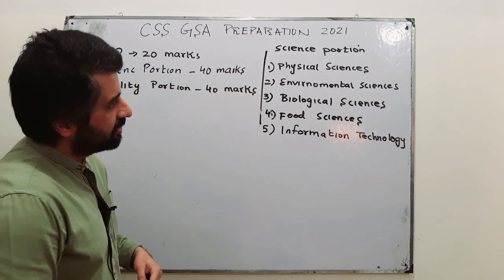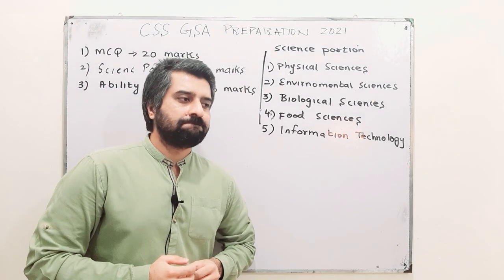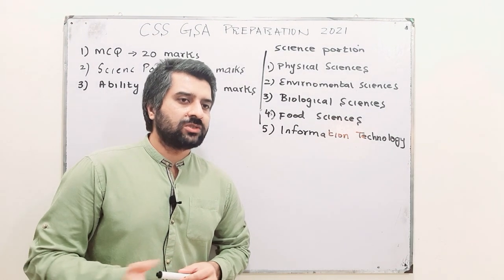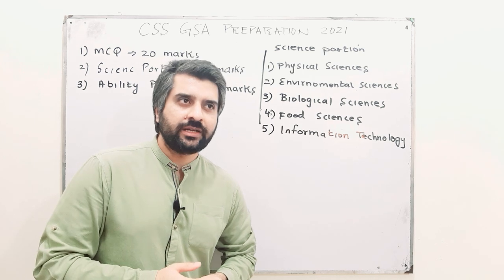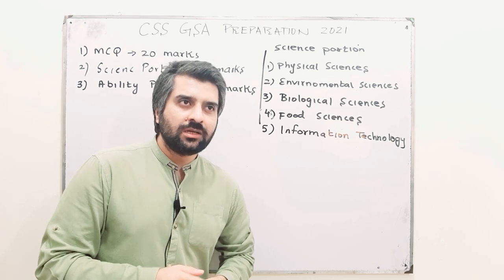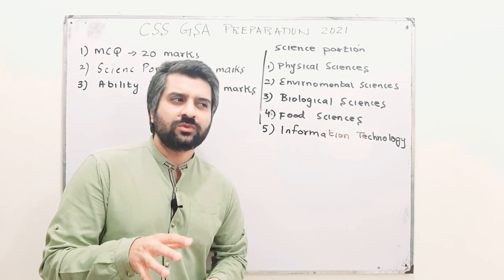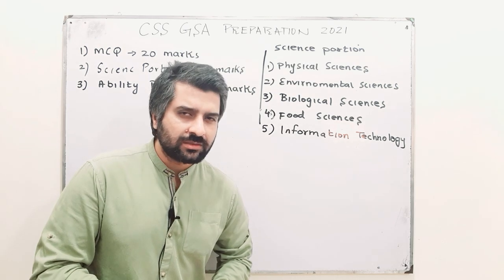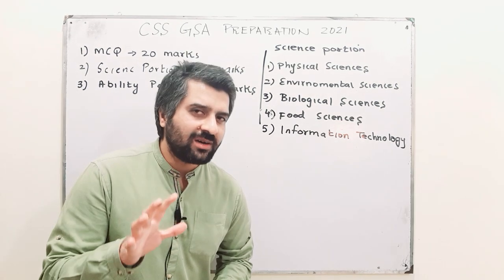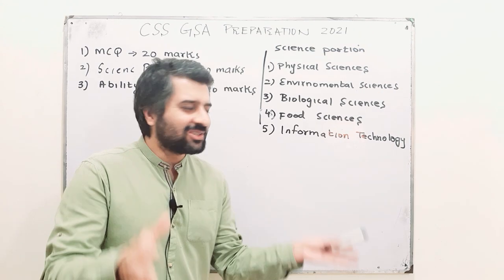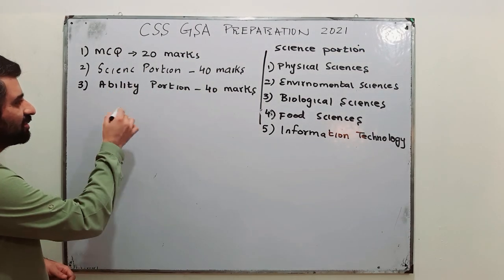From these sections, you have questions in your paper. Each question is 20 marks, both in the science section and in maths. Each question has four parts and each part has five marks. Next is what about your ability portion.